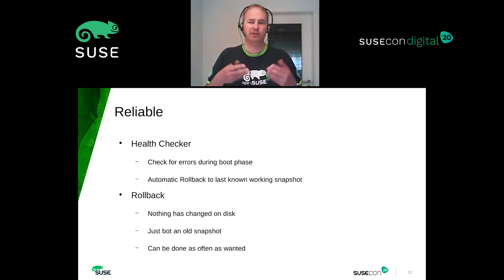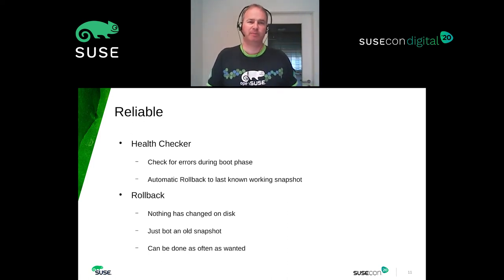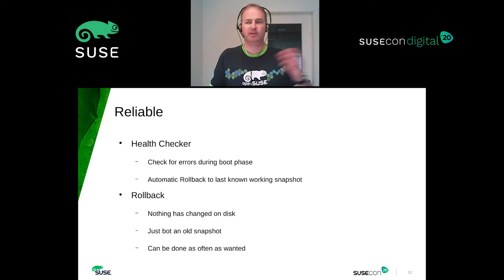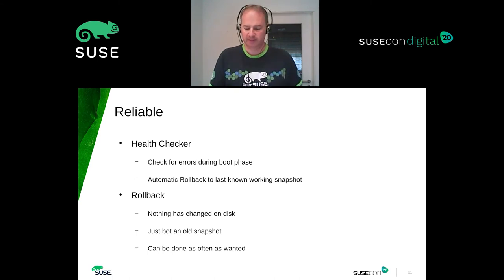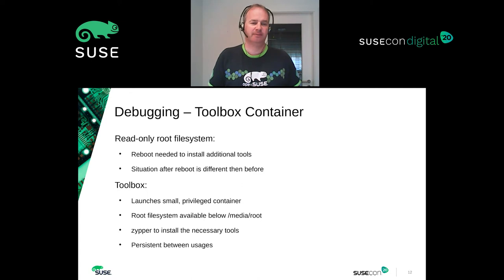If you compare this with SUSE Linux Enterprise Server snapshot rollback: if you do a rollback, you need to first create a new snapshot, and in most cases you even need to boot twice until you have done a real rollback. And you can only roll back into a snapshot once, not many times. So that's not an issue with MicroOS.